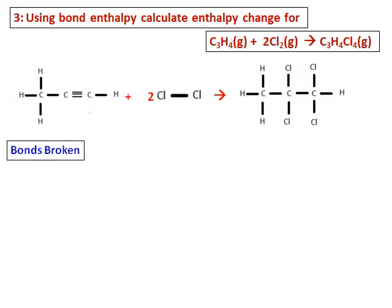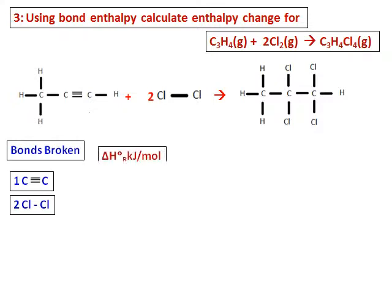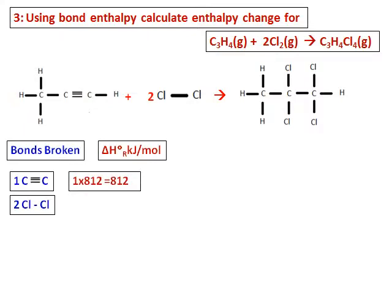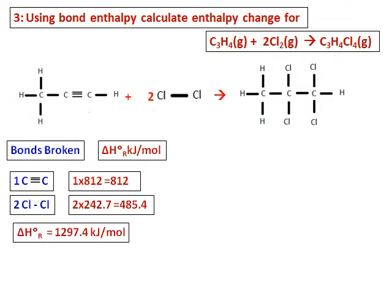Now let's see what are the bonds that is broken. In case of the reactant, we break the C triple bond C bond and ClCl bond is also broken. Two of the ClCl bond is broken and therefore if we write the delta H, the bond energies for them. The triple bond is 812 and ClCl single bond, it will be 2 times 242.7 and I get 485.4. Add up the 2, get the delta H for the reactant and that's 1297.4.